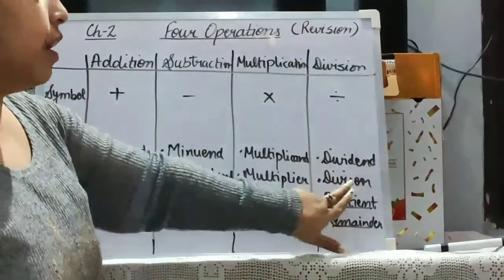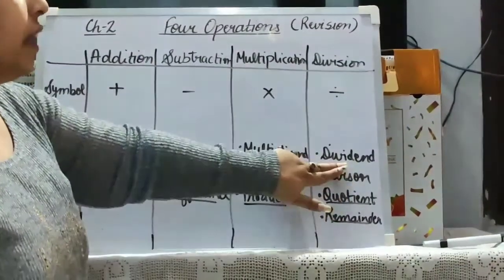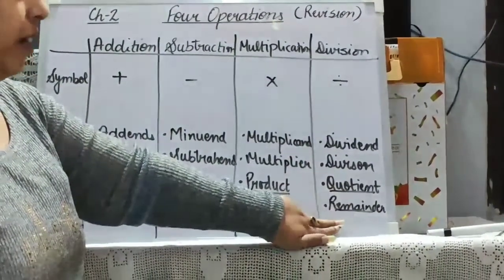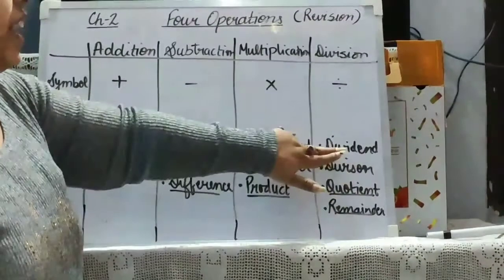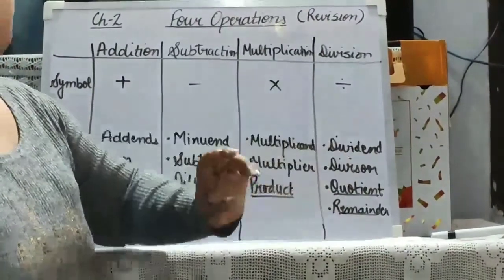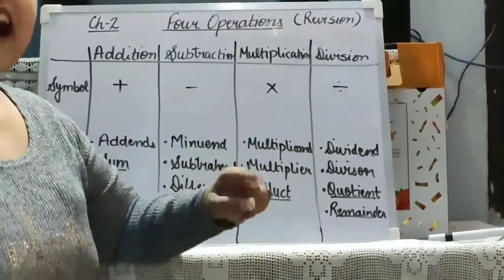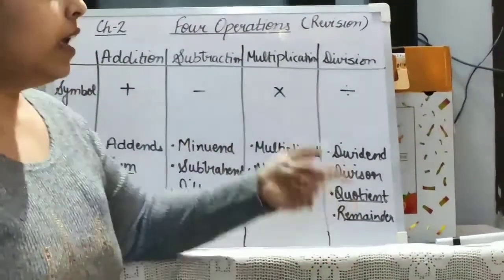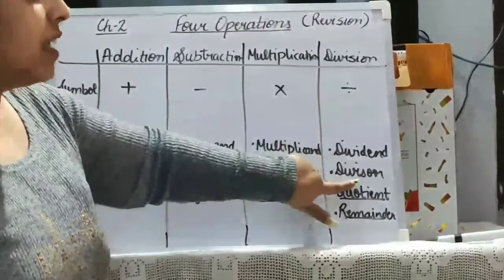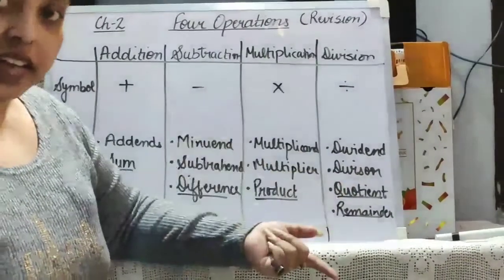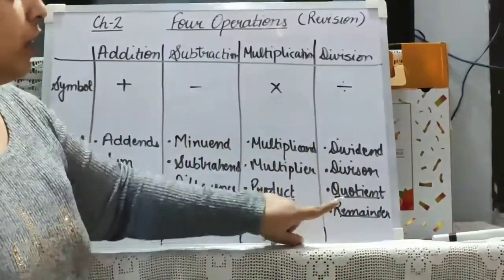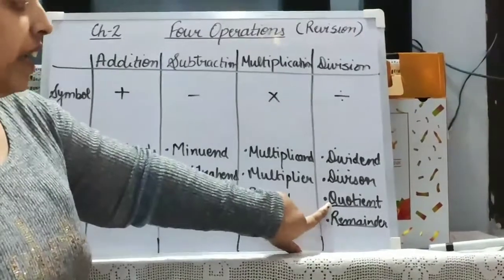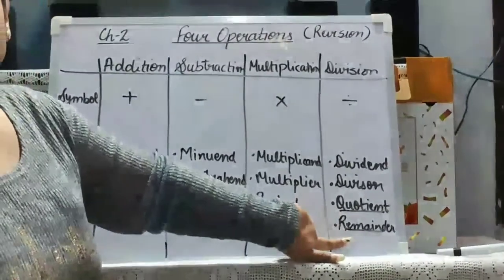In division there are 4 terms: dividend, divisor, quotient and remainder. Dividend is the number that will be divided. Divisor is the number that will divide, and the outcome will be 2 parts: quotient and remainder.